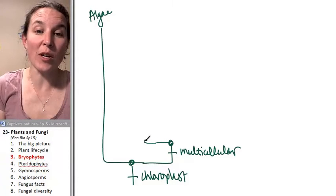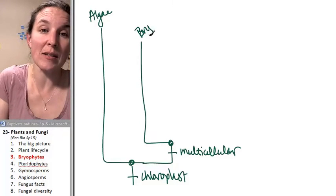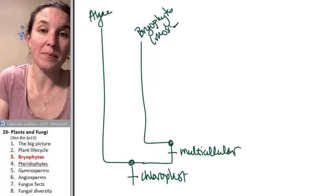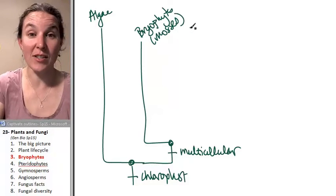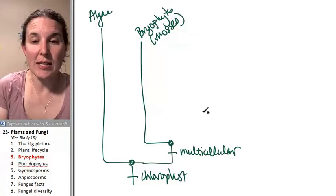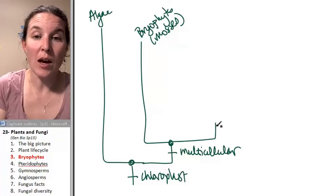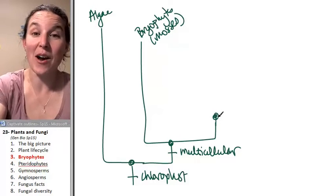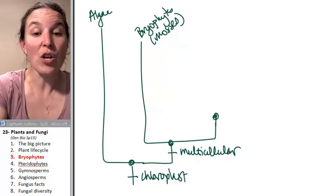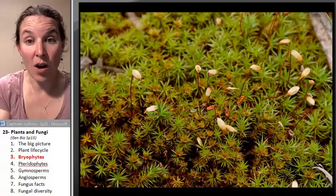The first group we're going to consider on the cladogram are the bryophytes, or mosses. We know that bryophytes are mosses.